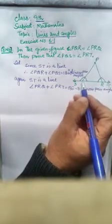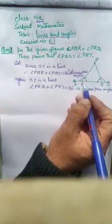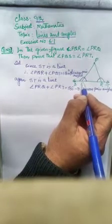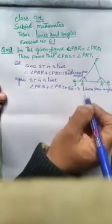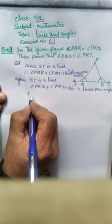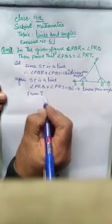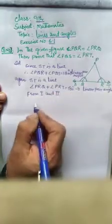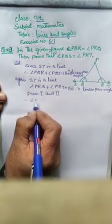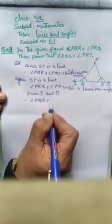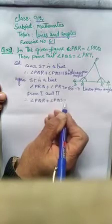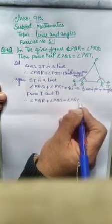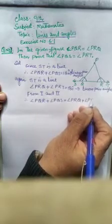From the first and second equations, we have angle PQR plus angle PQS equals angle PRQ plus angle PRT, both equal to 180 degrees.